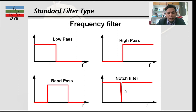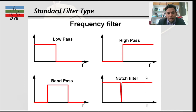The notch filter is used for a certain range of frequency. For example, if you want to remove frequencies from 50 to 60 Hz, you can define a notch filter to remove those frequencies from the seismic data.